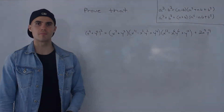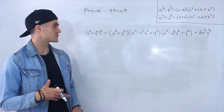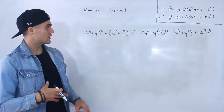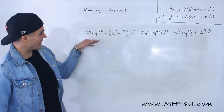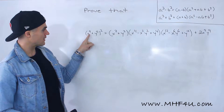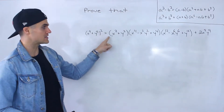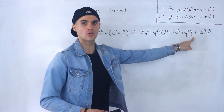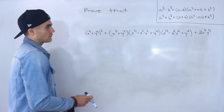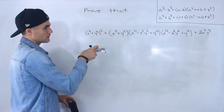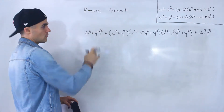What's up guys? Patrick here. Welcome back. Moving on to the next example dealing with the sum and difference of cubes. This is a pretty cool question. We've got to prove that the expression x to the power of 9 plus y to the power of 9, all to the power of 2, is equal to all of this, and to do that we're going to be using the sum of cubes formula throughout.